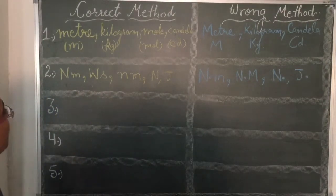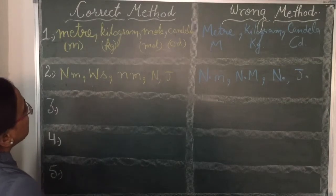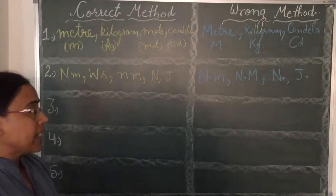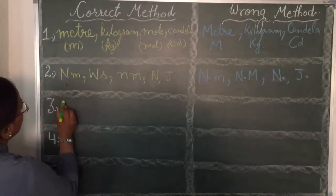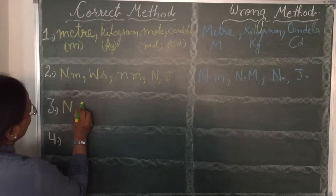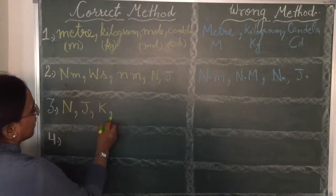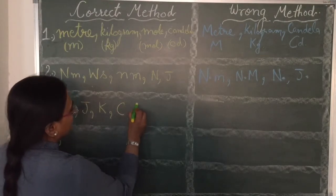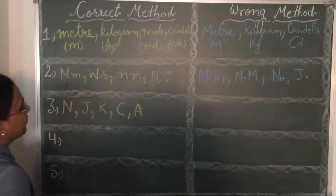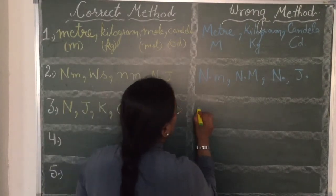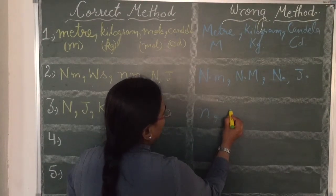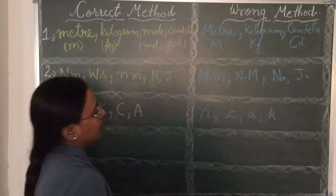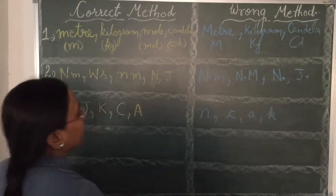Symbol should not be followed by a full stop. Third one is the symbol should be capital only when it is named after the name of a scientist. That is Newton, Joule, Kelvin, Coulomb, unit of charge, Ampere, unit of current, and it should not be written like this. Newton, Newton, Coulomb, Ampere, Kelvin, these are wrong. Joule.